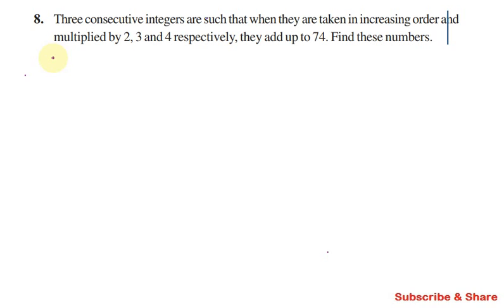When we take 3 consecutive numbers, we multiply them by 2, 3, and 4 respectively. The first number is multiplied by 2, second by 3, third by 4. When we multiply and add, they add up to 74.